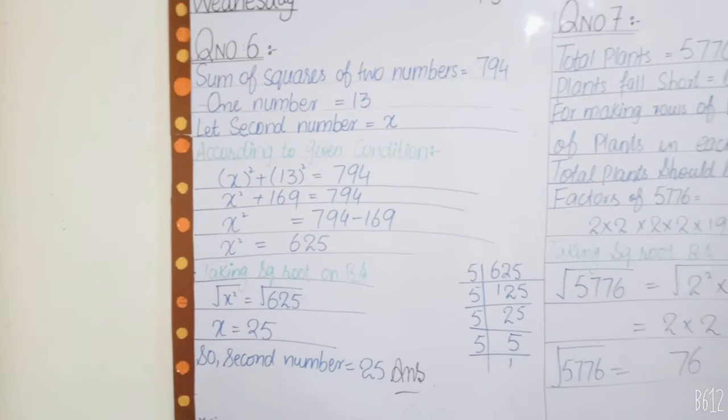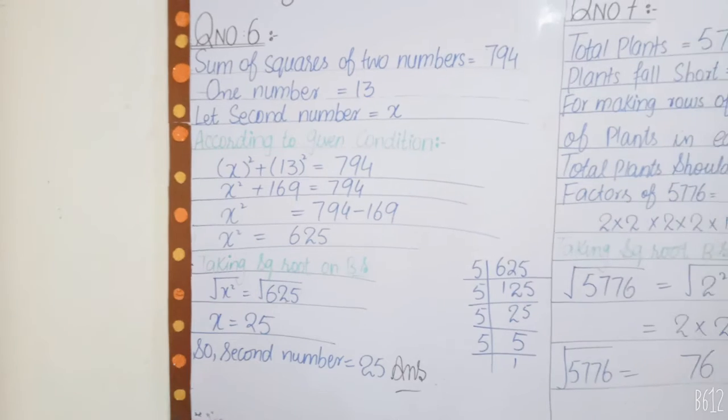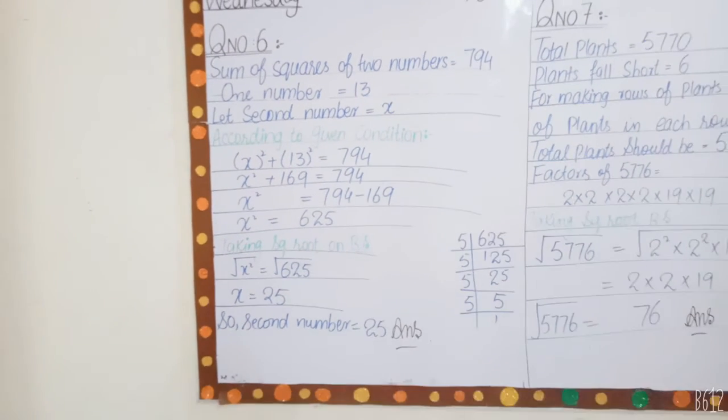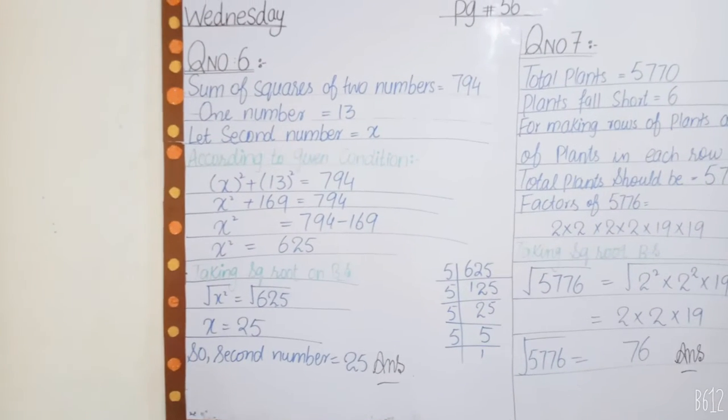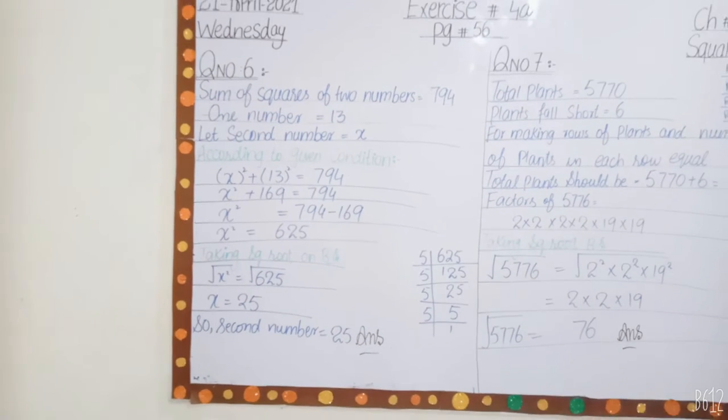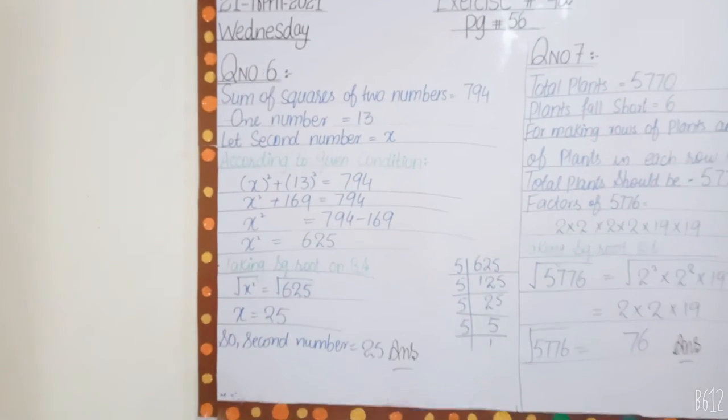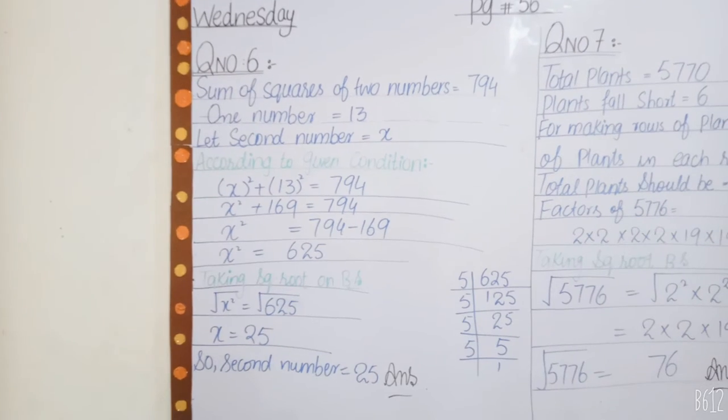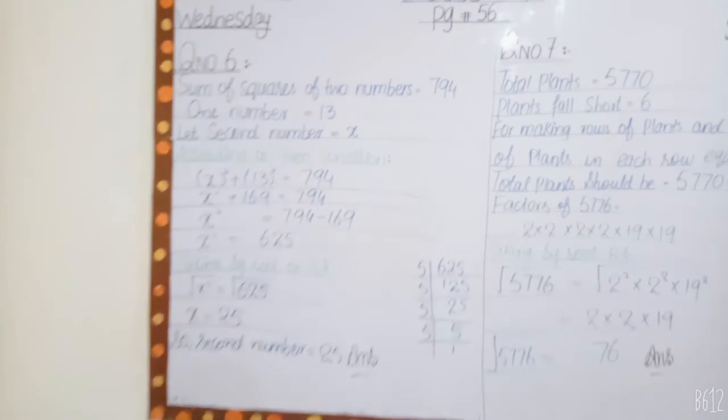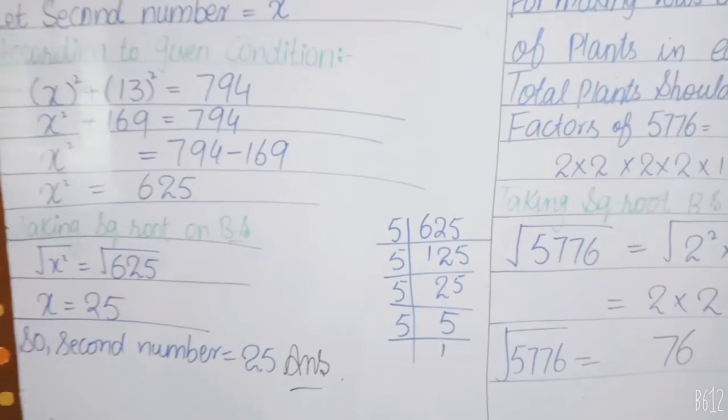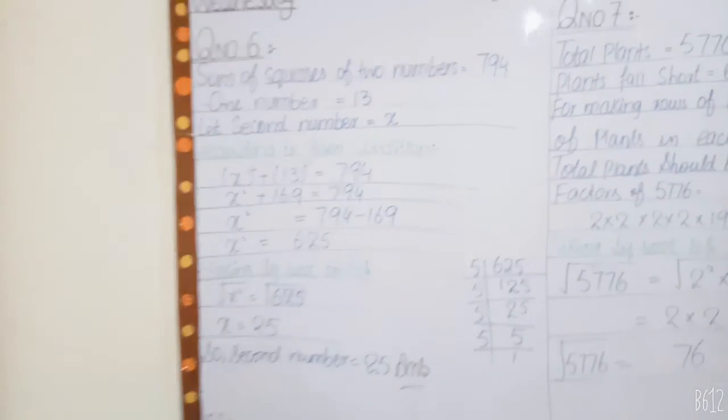x² = 625. To find x, not x², we take square root on both sides. When we take square root, x² cancels with square root, leaving x = √625. I found 625 using prime factorization method. When we multiply these factors, our answer is x = 25.